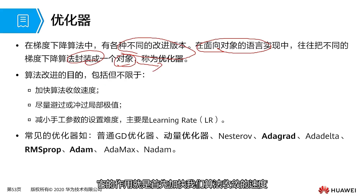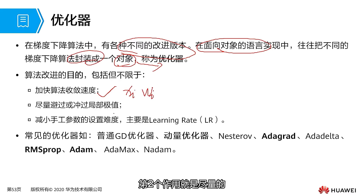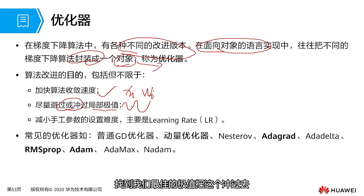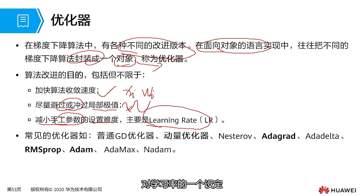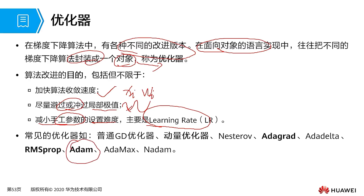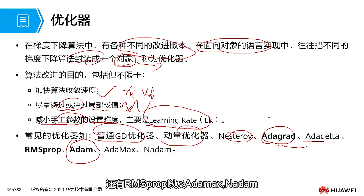The role of the optimizer is to: first, accelerate the convergence speed of our algorithm, finding the weights Wi corresponding to our Xi faster. Second, to try to avoid or pass through local extrema and find our best global extremum. Third, to reduce the difficulty of manual parameter settings, such as the learning rate. The optimizer we use most now is Adam. Before that, we also have regular gradient descent, momentum optimizer, Nesterov optimizer, AdaGrad, AdaDelta, RMSProp, as well as AdaMax, and Adam. Everyone must remember this.